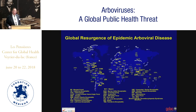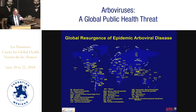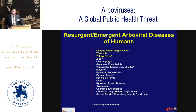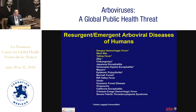Arboviruses are a critical component of this group. The message conveyed is that you can't go anywhere in the world without being at risk to one arbovirus or another, and some are repeated all over the world. This is just some of the resurgent epidemic viruses we've seen in the past 20 years or so. I've highlighted the first three and I'm going to use those as case studies, and touch very briefly on chikungunya and Zika.